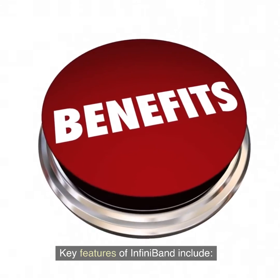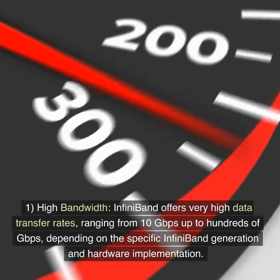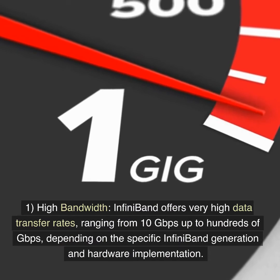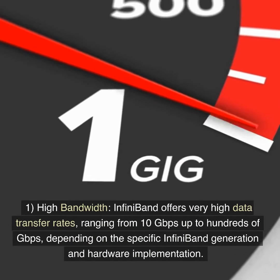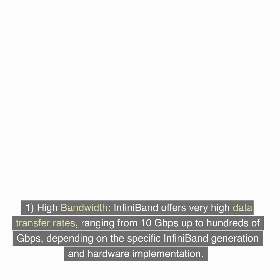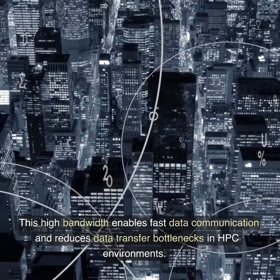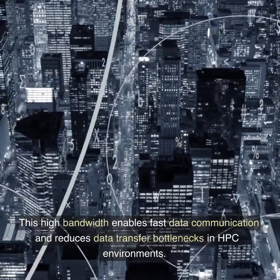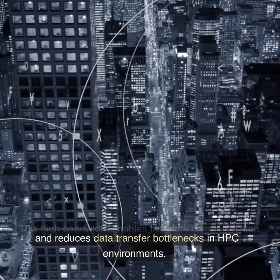Key features of InfiniBand include: 1. High bandwidth. InfiniBand offers very high data transfer rates, ranging from 10 gigabits per second up to hundreds of Gbps, depending on the specific InfiniBand generation and hardware implementation. This high bandwidth enables fast data communication and reduces data transfer bottlenecks in HPC environments.